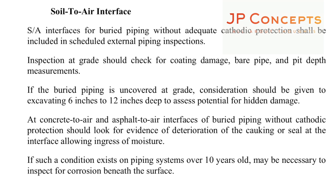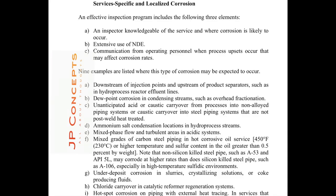For soil to air interfaces: buried piping without adequate cathodic protection shall be included in scheduled external piping inspections. Inspection at grade should check for coating damage, bare pipe, and pit depth measurements. If buried piping is uncovered, consideration should be given to excavating 6 to 12 inches deep to assess potential hidden corrosion damage. At concrete-to-air and asphalt-to-air interfaces of buried piping without cathodic protection, look for evidence of deterioration and damage. If such conditions exist on piping systems over 10 years old, it may be necessary to inspect for corrosion beneath the surfaces.